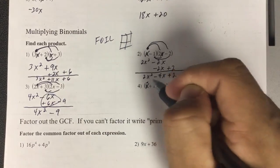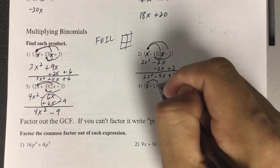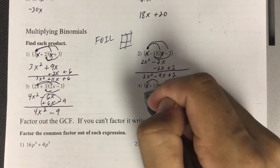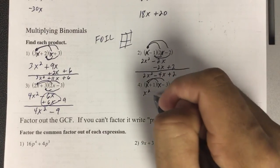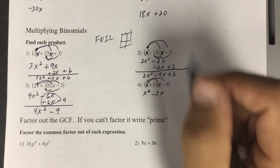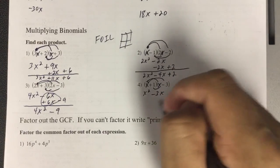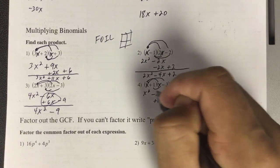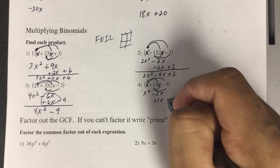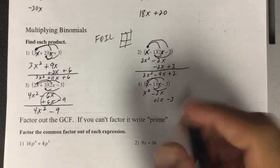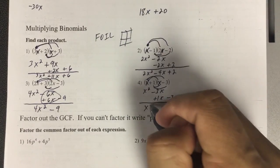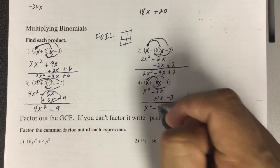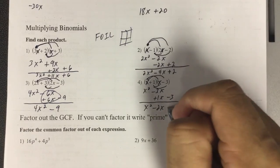On this one, x times x is x squared. x times negative 3, negative 3x. 1 times x is just positive 1x. 1 times negative 3 is negative 3. Add those parts up. So I have an x squared. I have a negative 2x. I have a negative 3.